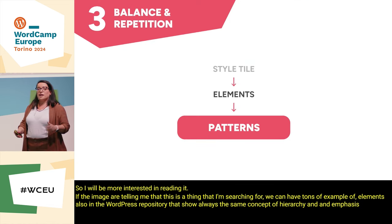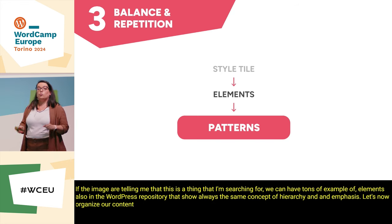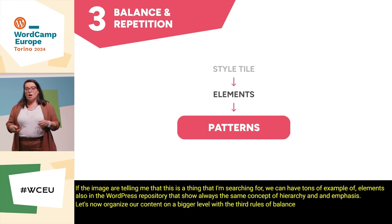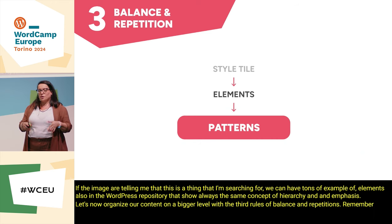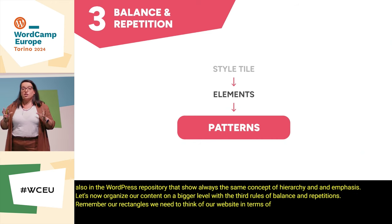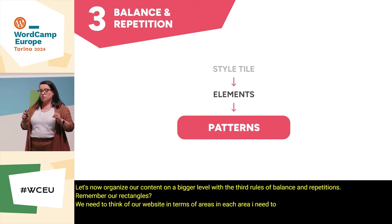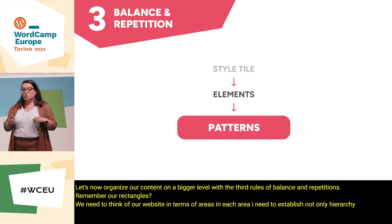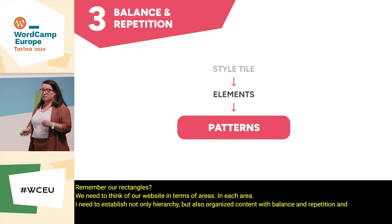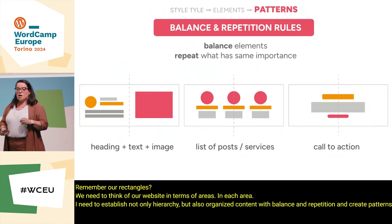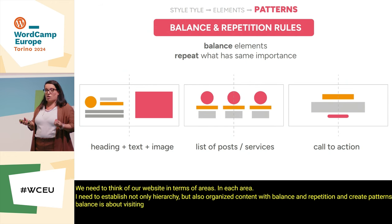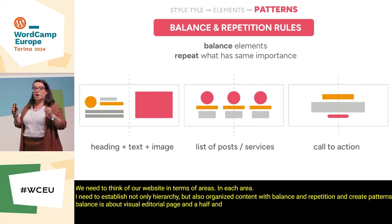Let's now organize our content on a bigger level with the third rule: balance and repetition. Remember our rectangles — we need to think of our website in terms of areas. In each area I need to establish not only hierarchy, but also organize content with balance and repetition and create patterns. Balance is about visually dividing our page in half and calibrating the visual weight of every element.